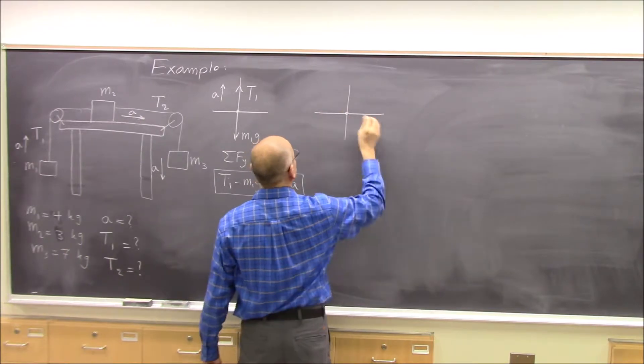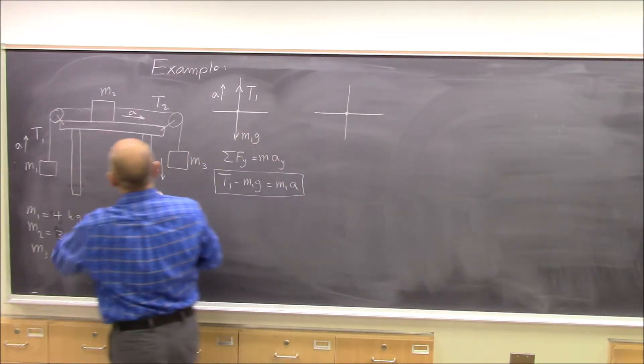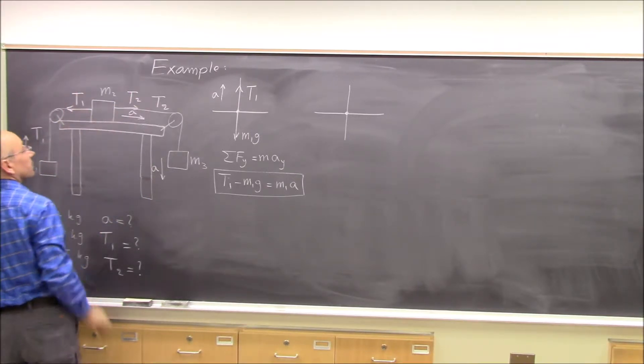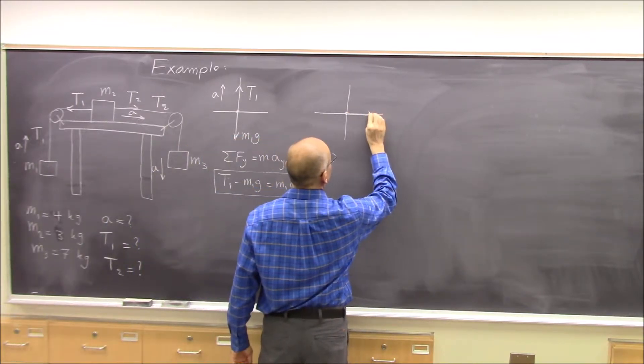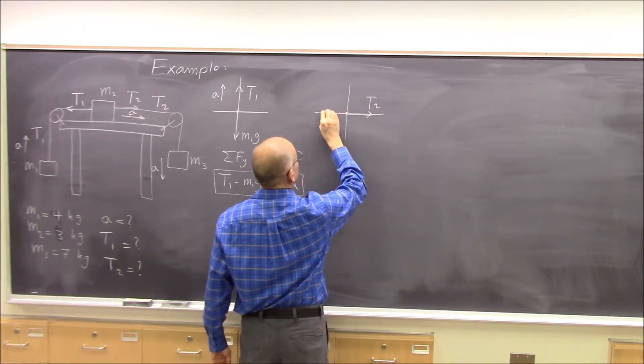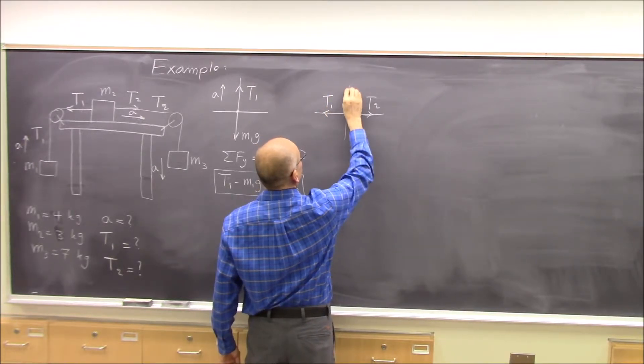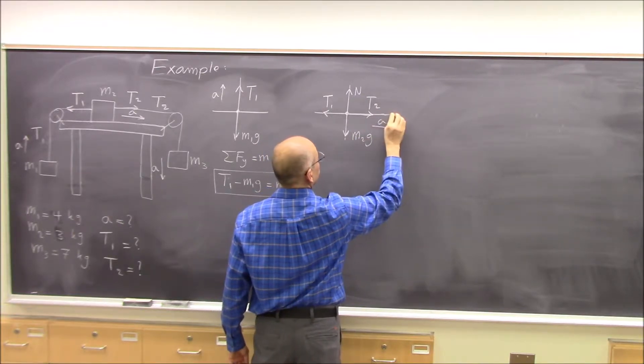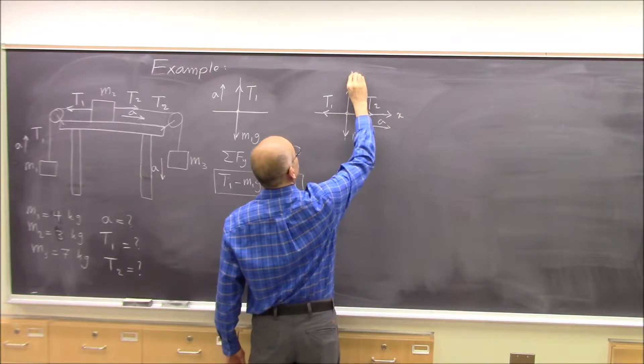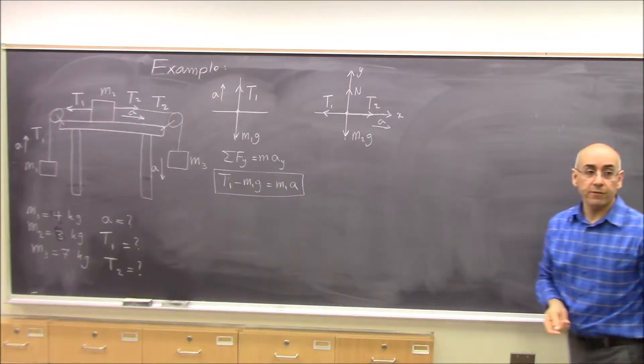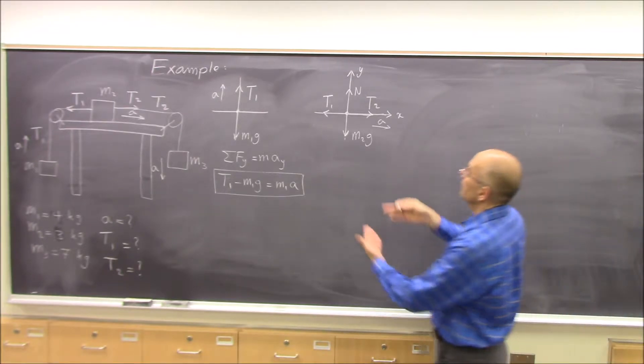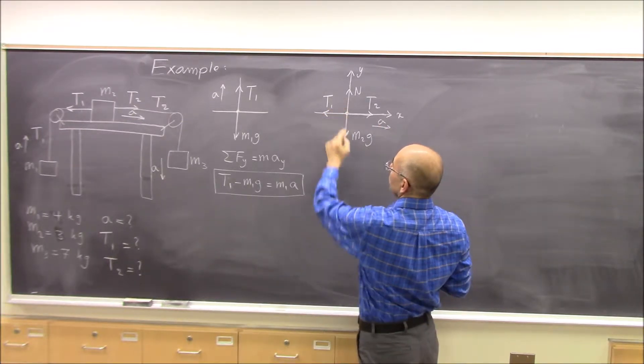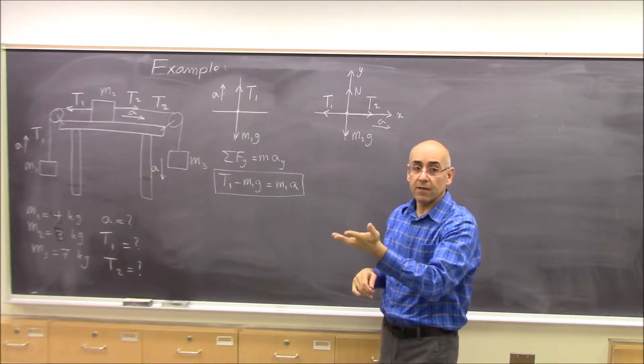Then we do free body diagram for m2. We have t2 applying this way and t1 pulling this way. So we have t2 and t1 and then you have normal force and m2g and the acceleration is in x direction. This is free body diagram for m2. And if you do sum of fy equal to m ay, ay is 0 because a is in the x direction. So it just gives you m2g equal to n. That's not very helpful.